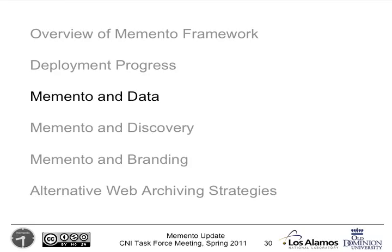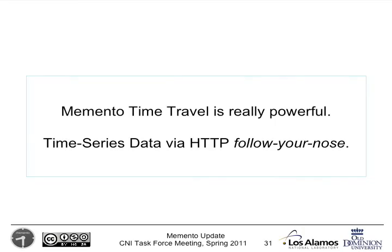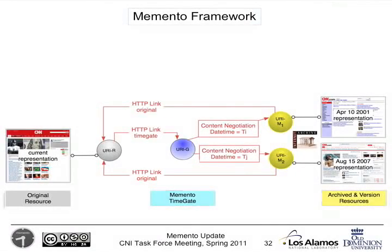Memento and data. We feel that Memento's time travel on the web possibilities are really powerful, not just for the human web, but also for the semantic web in which machines crawl around looking for data that they can interact with. This uses a process called following your nose in HTTP speak. I'll give a quick walkthrough about how it will work for the human side, and then relate that over to the data side for how a machine might use this. You've got the current representation of CNN, obviously intended for humans — you can go to a time gate, and the time gate sends you to an archive copy closest in time to where you want to be.